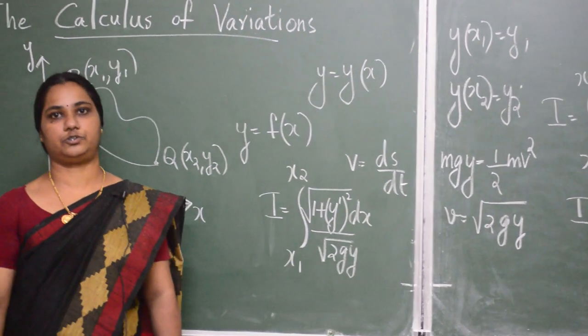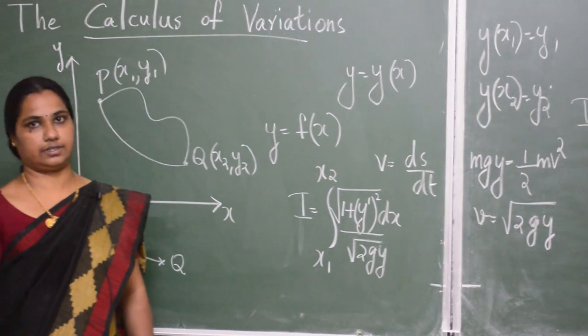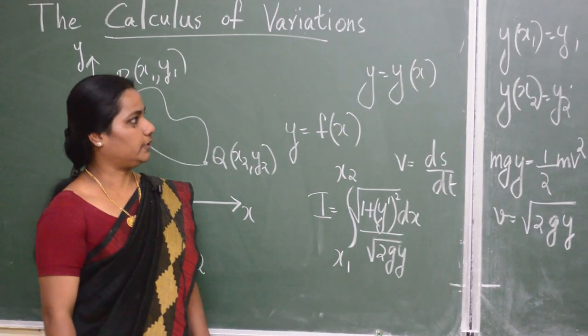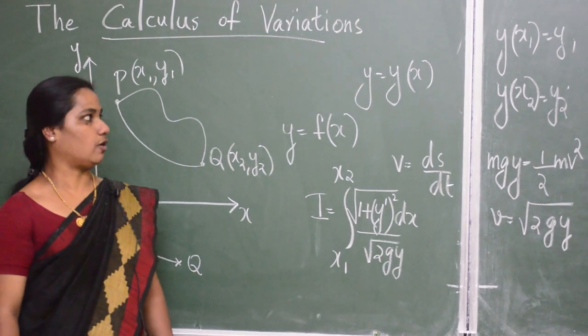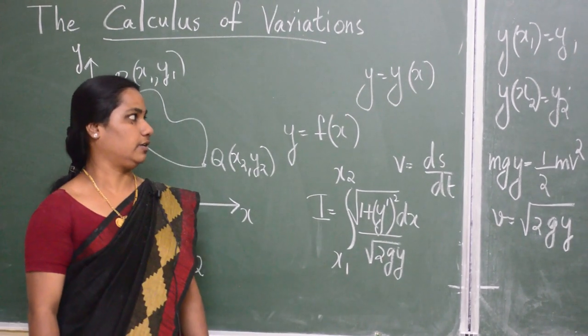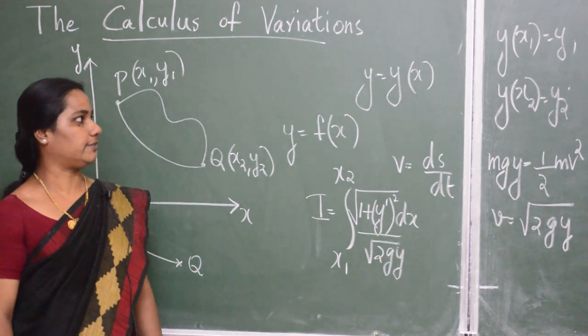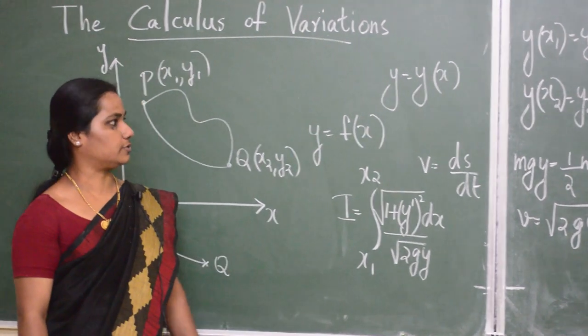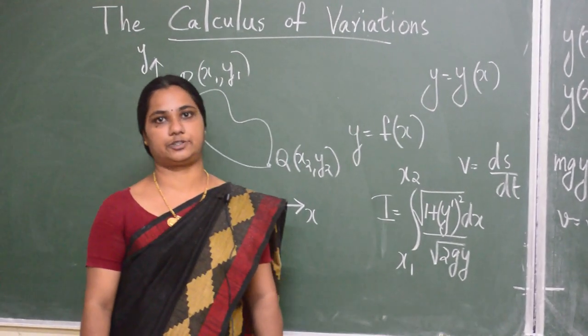Such functions are said to be admissible functions. Now, we will try to find the Euler's differential equation, which provide the stationary values for providing the solutions to such type of problems in the next part.